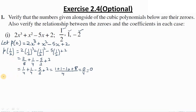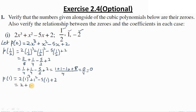Now substituting x = 1: p(1) = 2×1³ + 1² - 5×1 + 2 = 2 + 1 - 5 + 2. This gives 3 - 5 = -2, and -2 + 2 = 0. So p(1) = 0. This means p(1/2) = 0 and p(1) = 0.